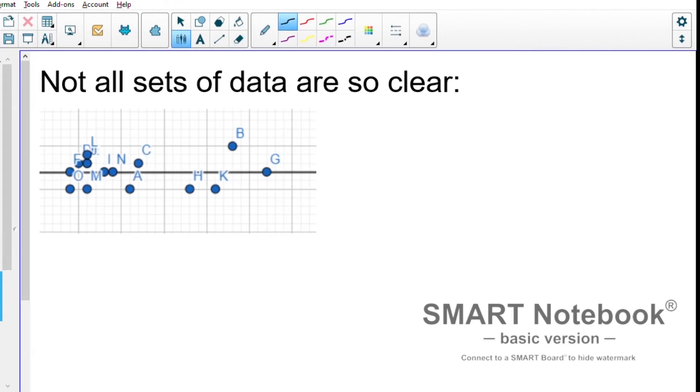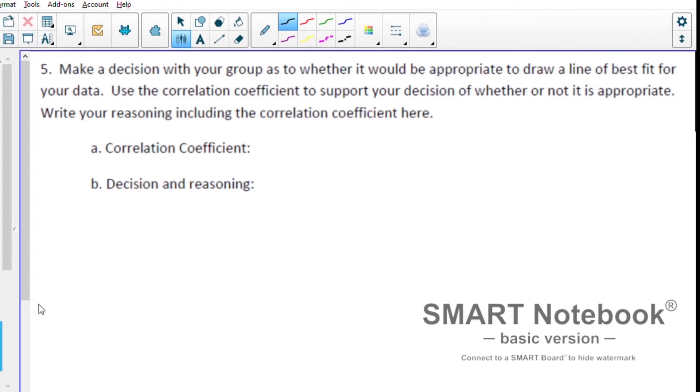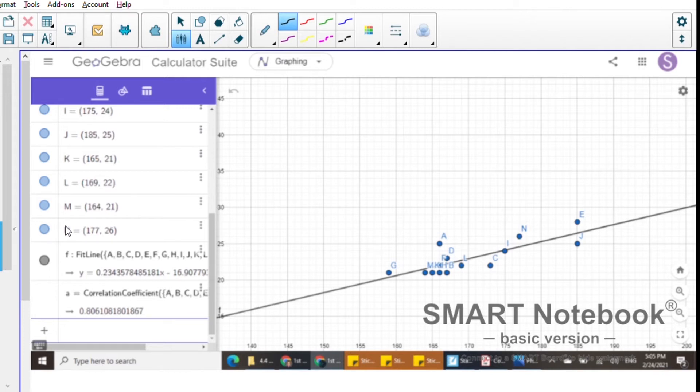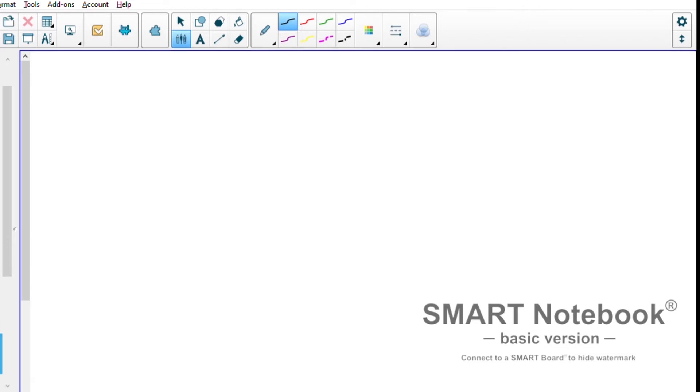We're going to continue to work with our data from first period. Our next task on question number five would be to decide if we should have a line of best fit or not. The correlation coefficient is going to help us with our decision. This can be calculated using GeoGebra. You can see at the bottom we've got our correlation coefficient of 0.806. We're going to round that to the nearest thousandth, so we'll write down 0.806.